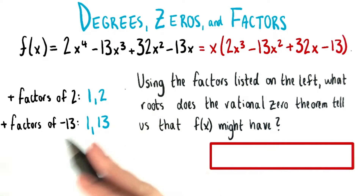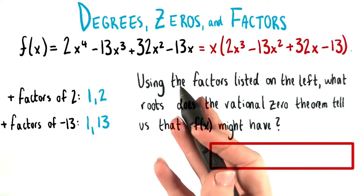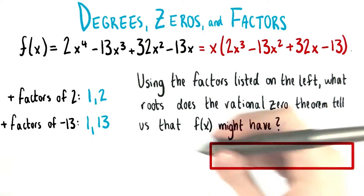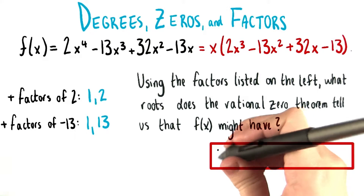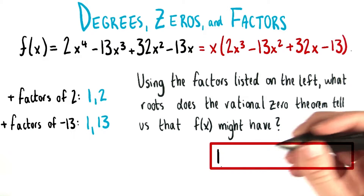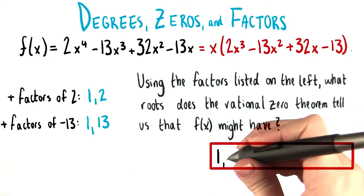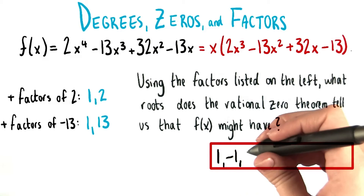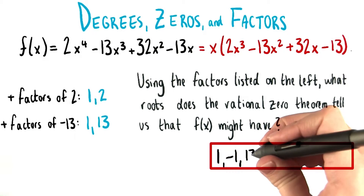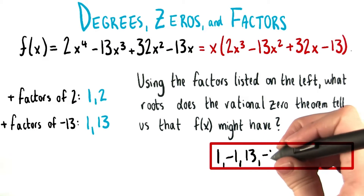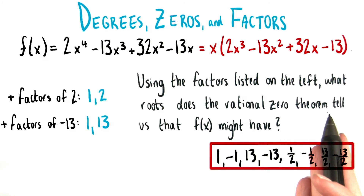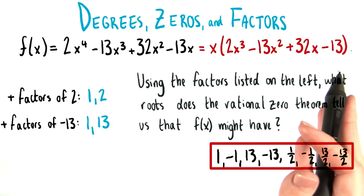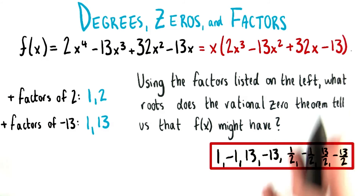Then we need to take the positive and negative versions of each of these ratios. So we could have 1 over 1, which is 1, or the negative version of that, negative 1. 13 over 1, which is just 13, and negative 13 as well. In the end, we come up with 8 roots that the rational zero theorem tells us this function might have.